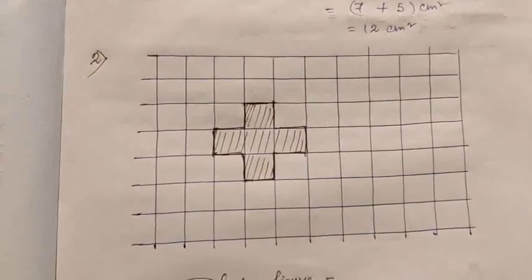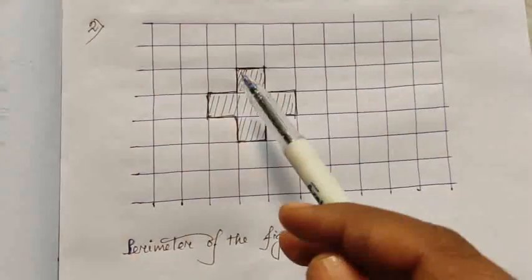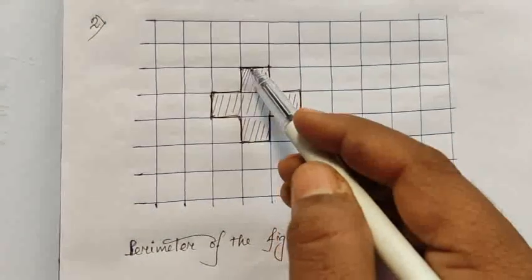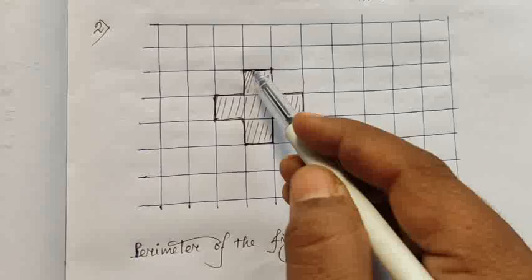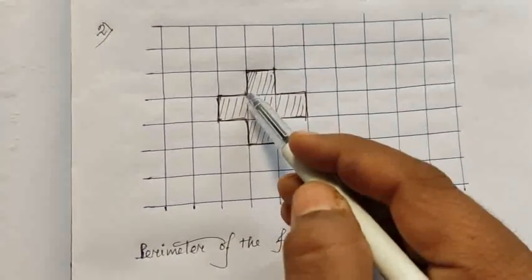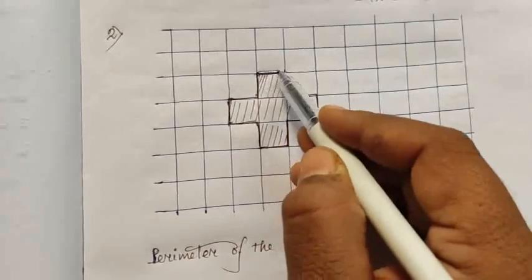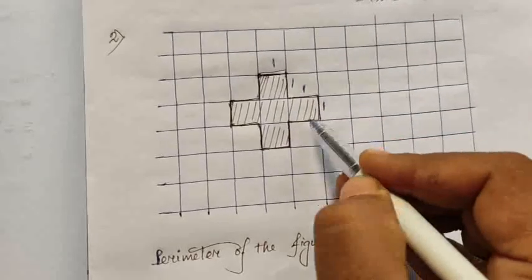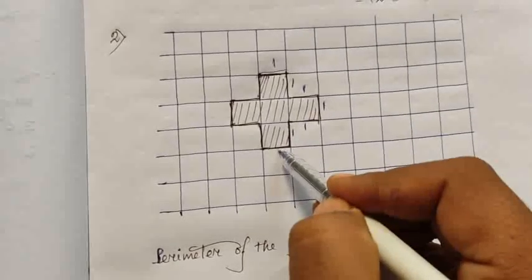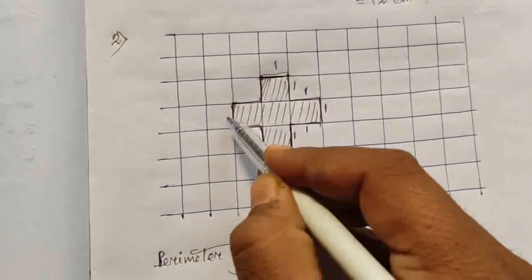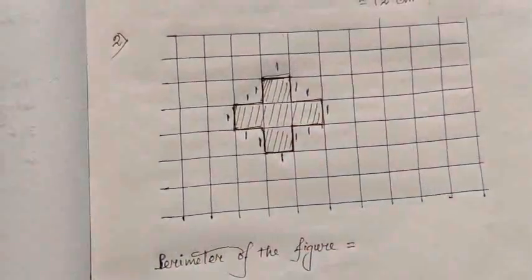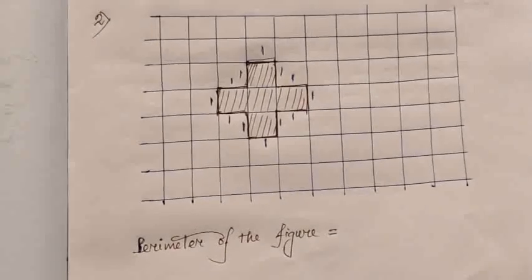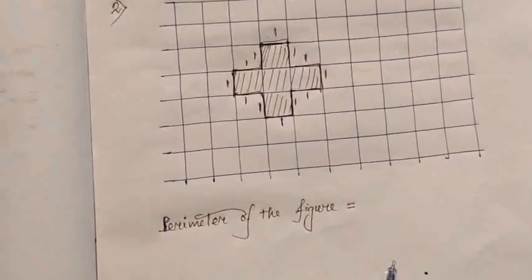Now come to the next problem. In this case we have to find out the area of the figure — it is very easy. You can see the length of each part of the boundary is one centimeter. As you know, perimeter means the length of its boundary, which we have already learned. So what is the perimeter of the figure?